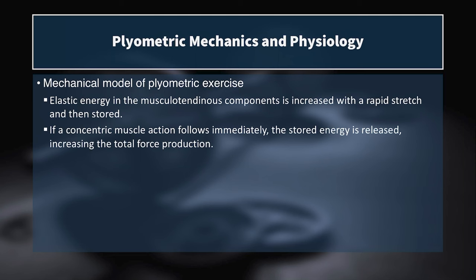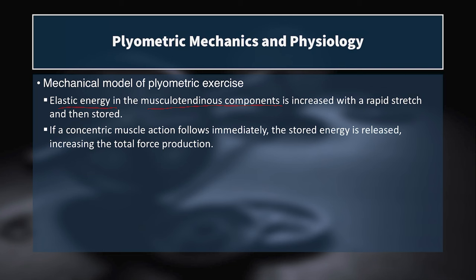The mechanical model of plyometric exercise describes how the musculotendinous components are able to store elastic energy during a rapid stretch. Essentially, these elastic components in your muscles, when stretched rapidly, store energy just like a rubber band or a spring does. If you follow this with a concentric muscle action immediately afterwards, that stored energy is released, increasing the total force production — so it's like free force production.